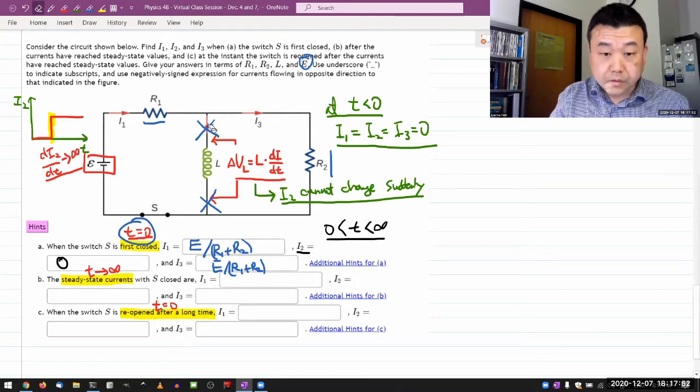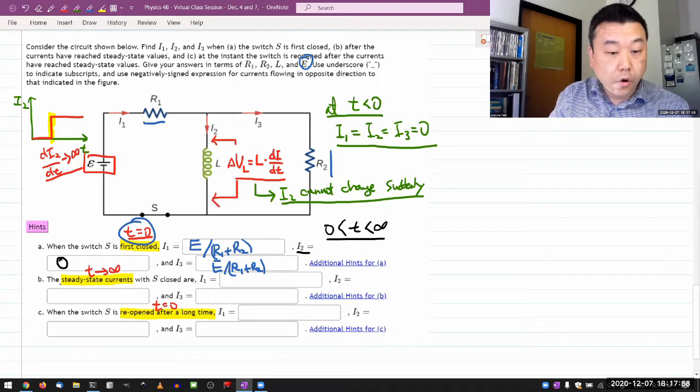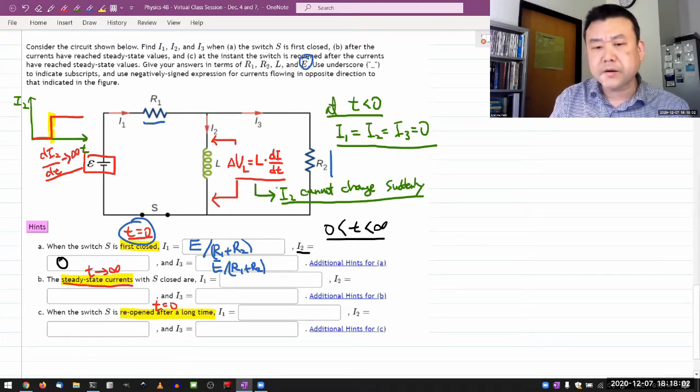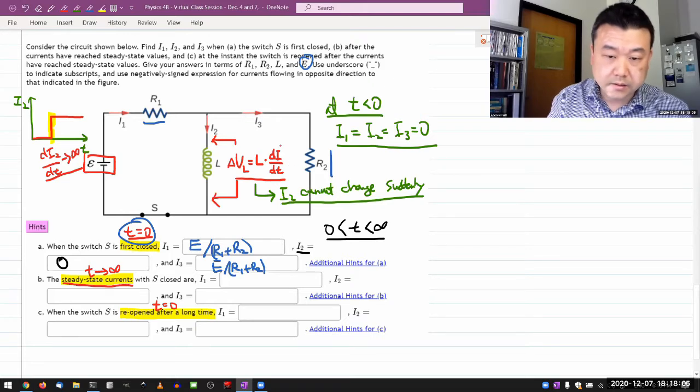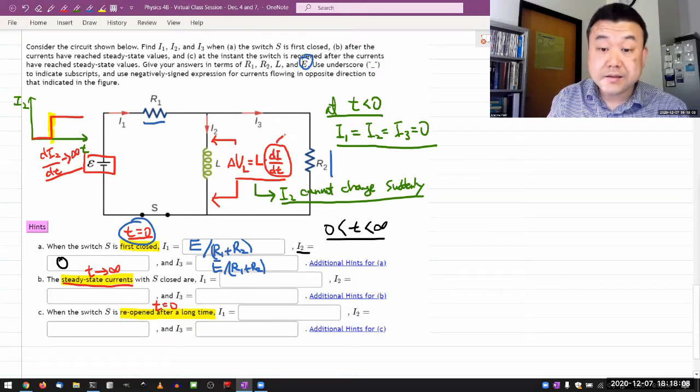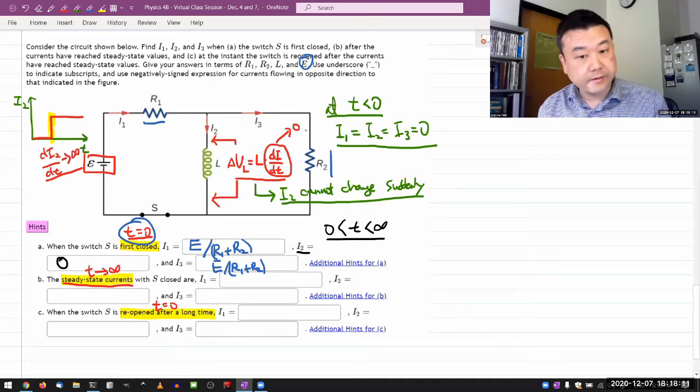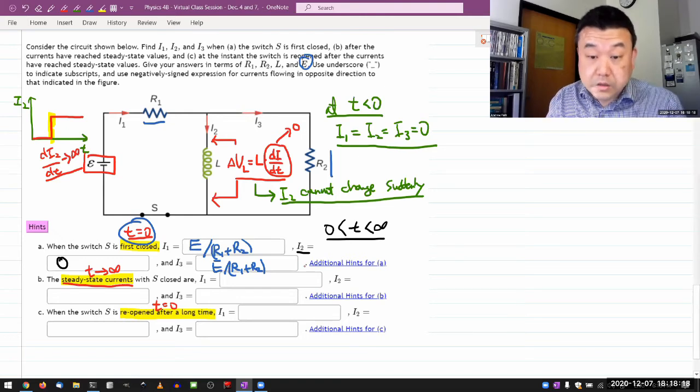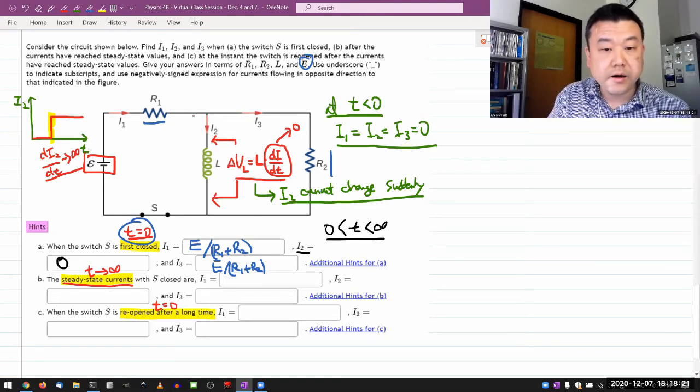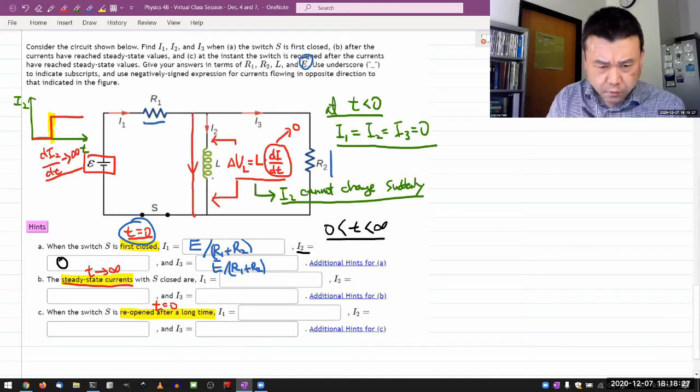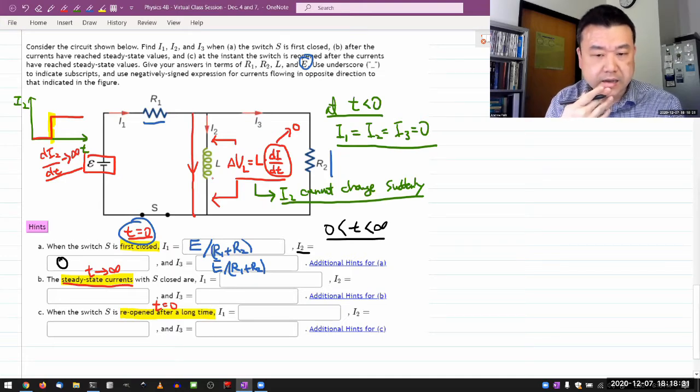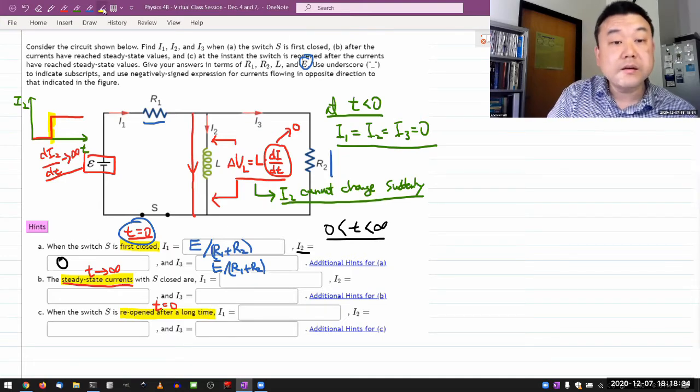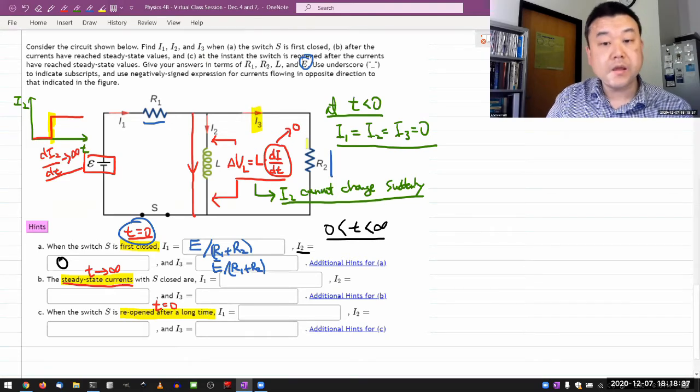Now, for part B, it's asking for after a long time, steady state currents. And that's a key part here, which means this time derivative di/dt is going to go to zero at steady state. That's kind of what steady state means. Time derivatives are zero. So under this situation, this inductor acts like a simple wire or short.